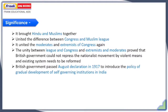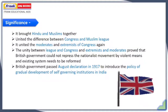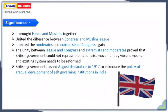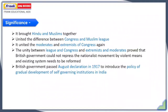Seeing this unity between the League and Congress, and between the extremists and moderates, the British government knew that they could no longer repress any nationalist movement by violent means, and that the existing system needed to be changed. Thus, the British government passed the August Declaration in 1917 to introduce the policy of gradual development of self-governing institutions in India.